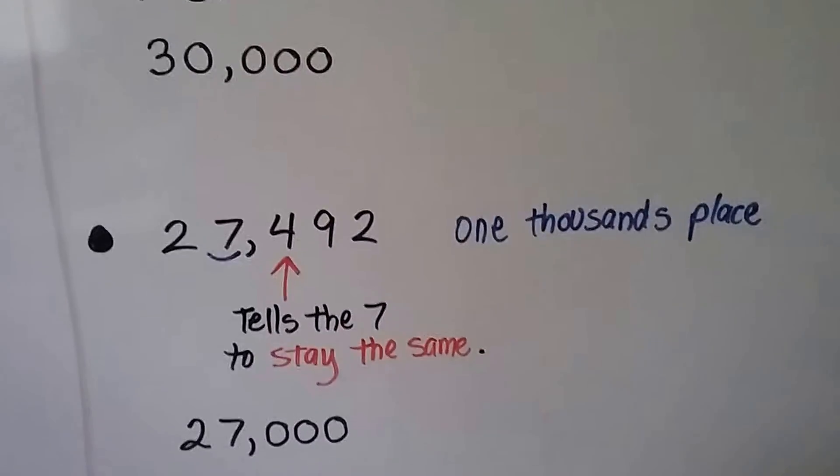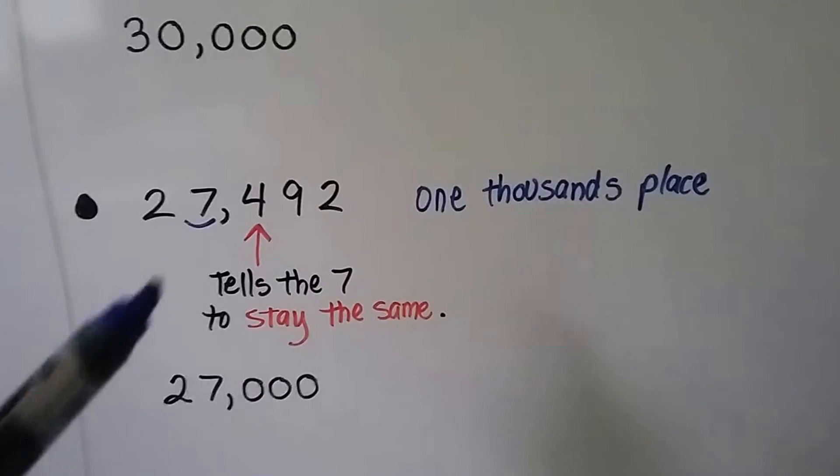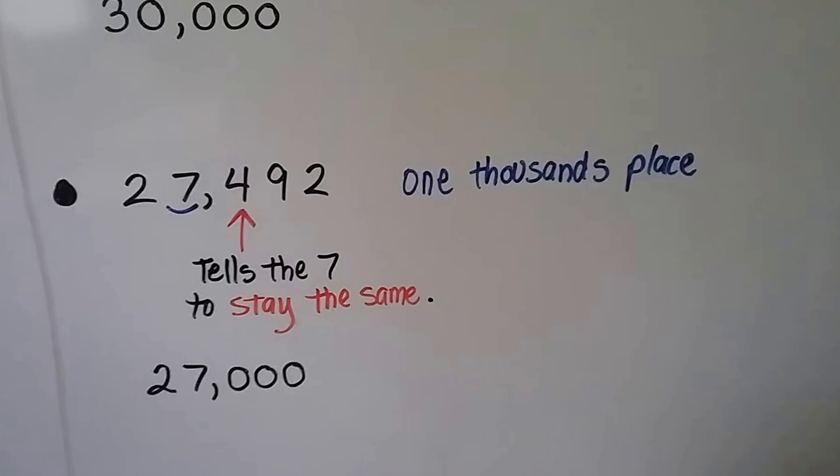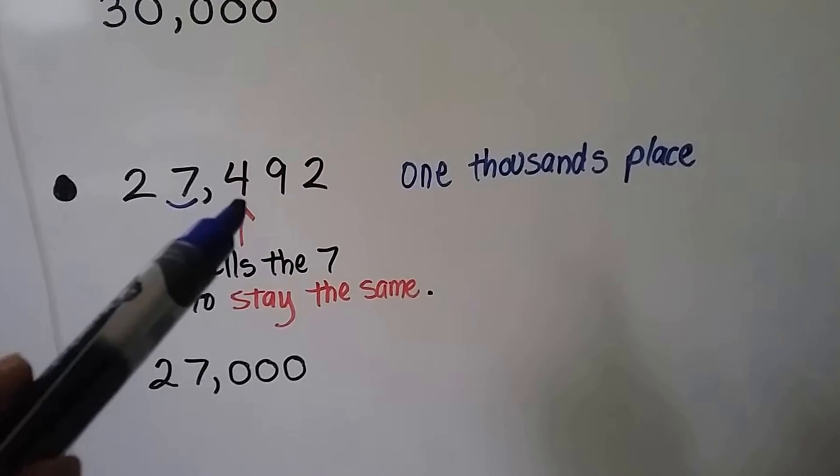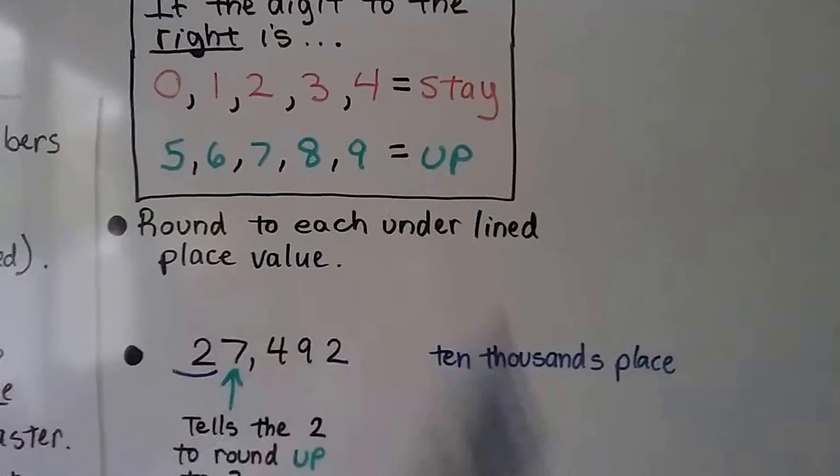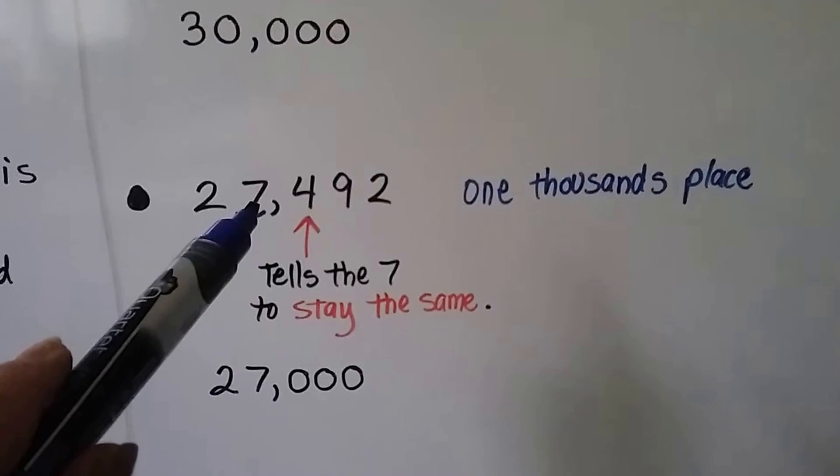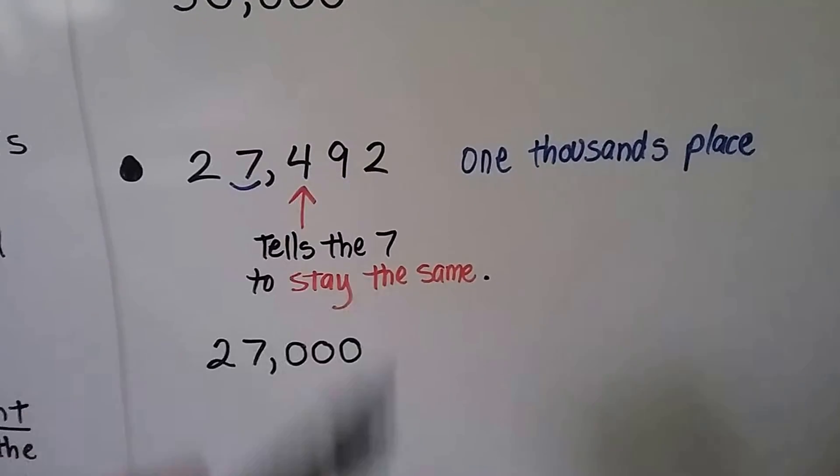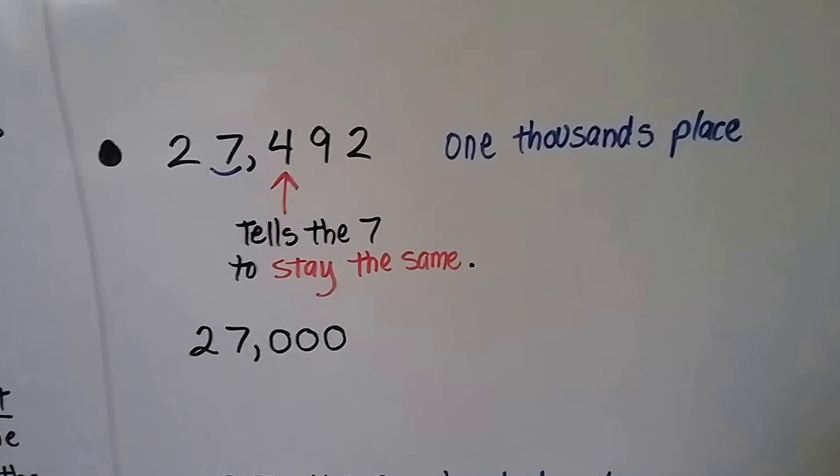We've got the exact same number, 27,492, except now this 7 is underlined. That's the one thousands place. We look to the digit to the right. This 4 tells the 7 to stay the same. 4 says stay. So this 7 is going to stay the same. These all are finished doing their job, and they all turn into zeros. We have 27,000.